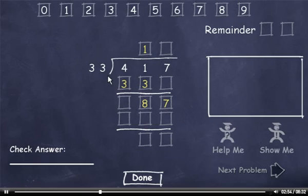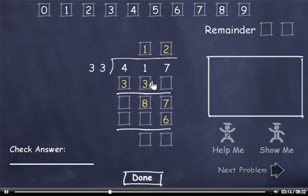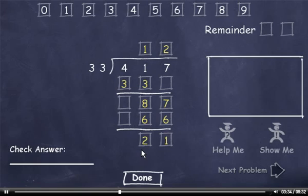33 goes into 87 two times. 2 times 3 is 6, and 2 times 3 is 6. Now 7 minus 6 is 1, and 8 minus 6 is 2. I'll put 21 in the remainder fields. The answer is 12, remainder 21.